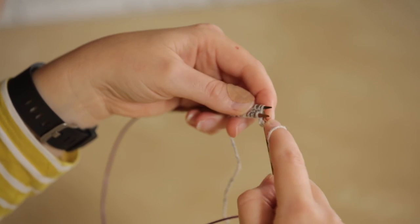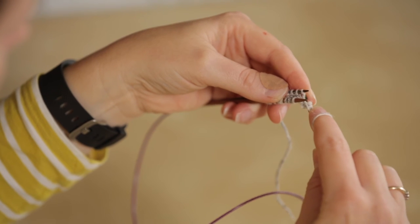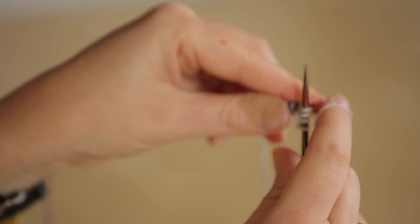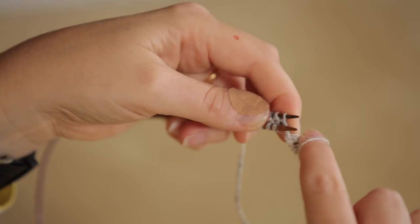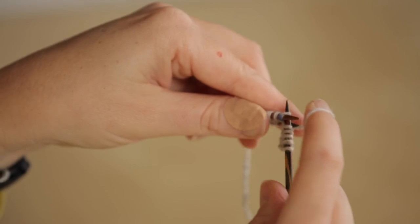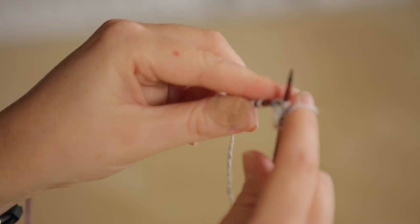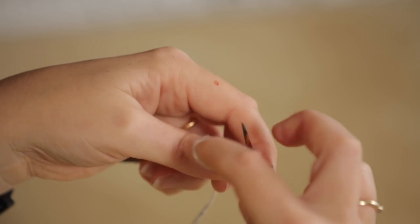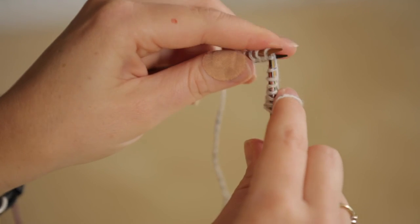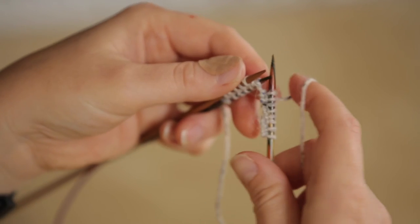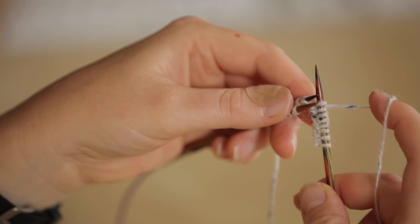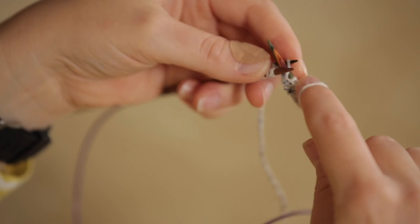And then you just continue to alternate so you purl from the back needle and then you knit from the front needle, carefully moving your stitches up so that you don't drop any. Purling from the back needle and then knitting from the front needle. And as you work along you'll see that that folds that slim stocking stitch edge so that it wraps around one side creating the purl stitches and the other side creating the knit stitches.